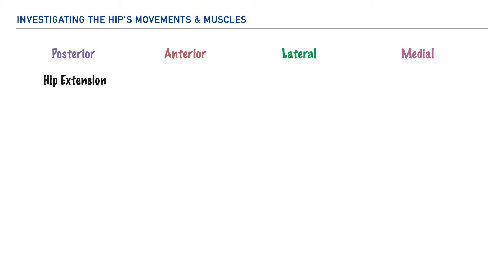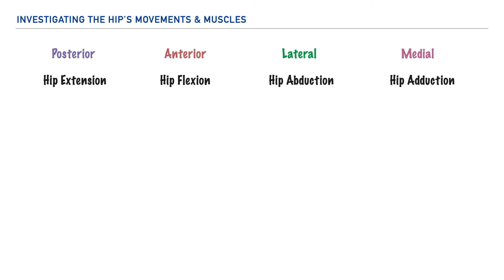For those that are anterior, the action they perform is primarily hip flexion. On the lateral aspect, the primary movement performed by these muscles is hip adduction. And for the muscles on the medial aspect, the primary action performed here is hip adduction.